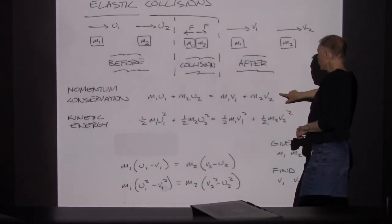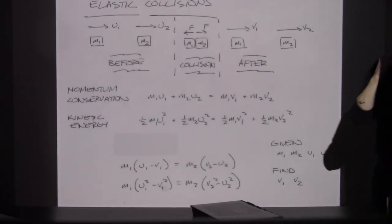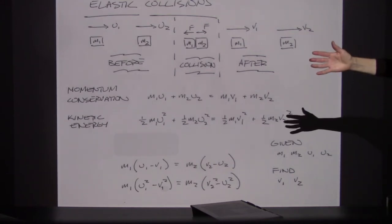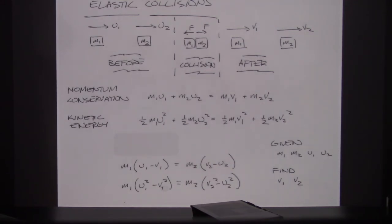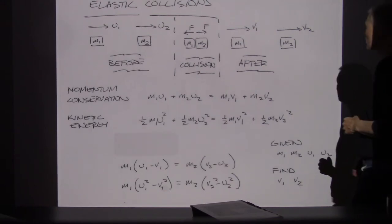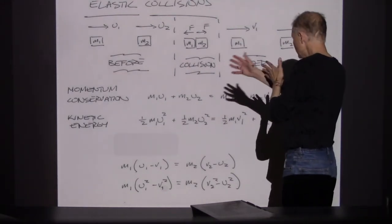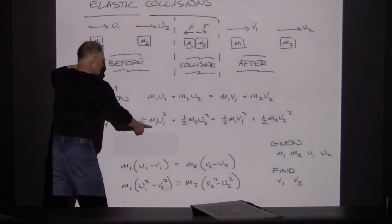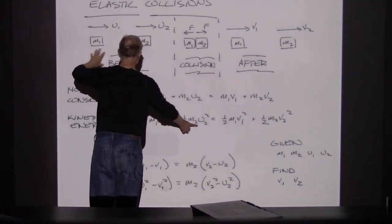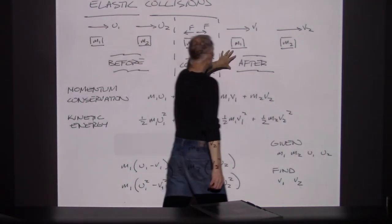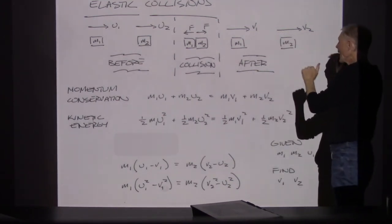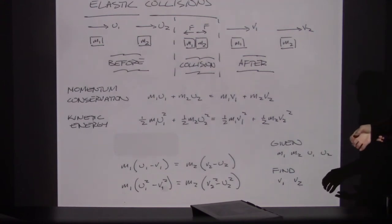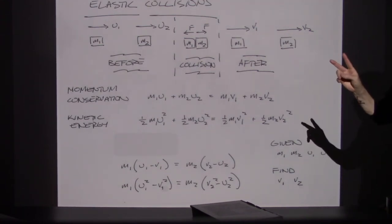For kinetic energy, the kinetic energy of object 1 plus object 2 has to equal the kinetic energies of objects 1 and 2 after the collision — kinetic energies before equal kinetic energies after. So I have two equations with two unknowns, V1 and V2.